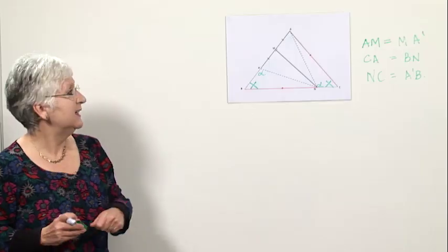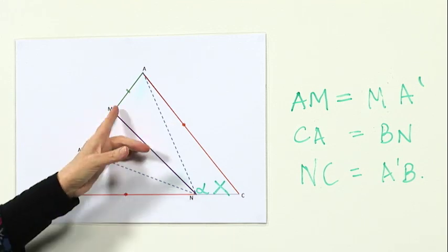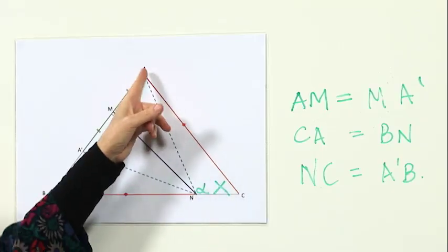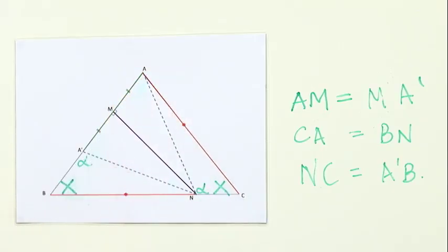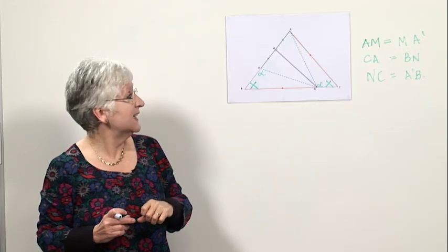In the same way, we know that the area of the triangle AMN is the same as the area of the triangle MA dashed N, because they are congruent. And the area of the triangle CAN is the same as the area of the triangle NA dashed B, because they are congruent. So when we add these two areas together, we get the same as these two areas. And so, the line MN has divided the original triangle ABC into two equal areas.